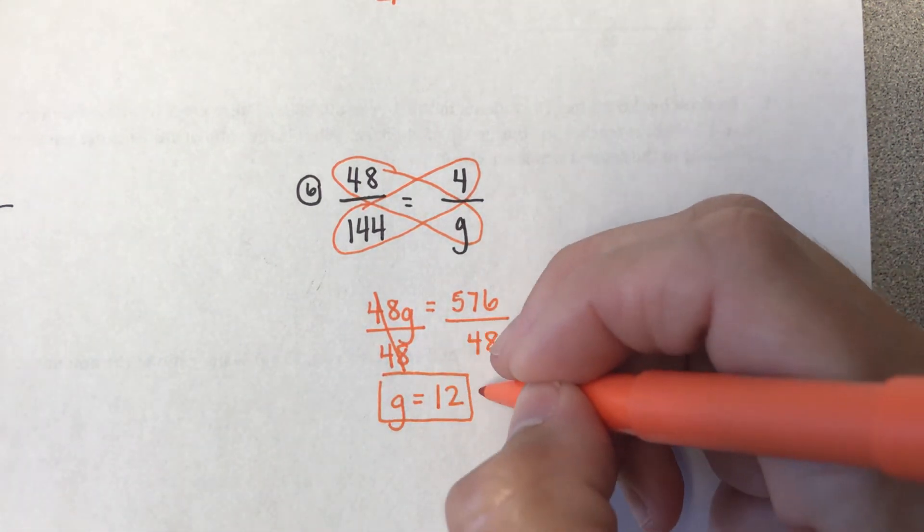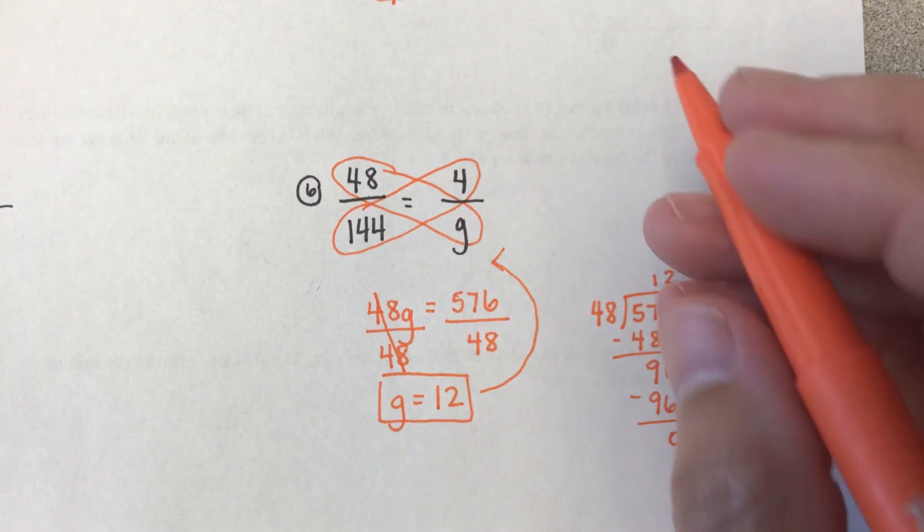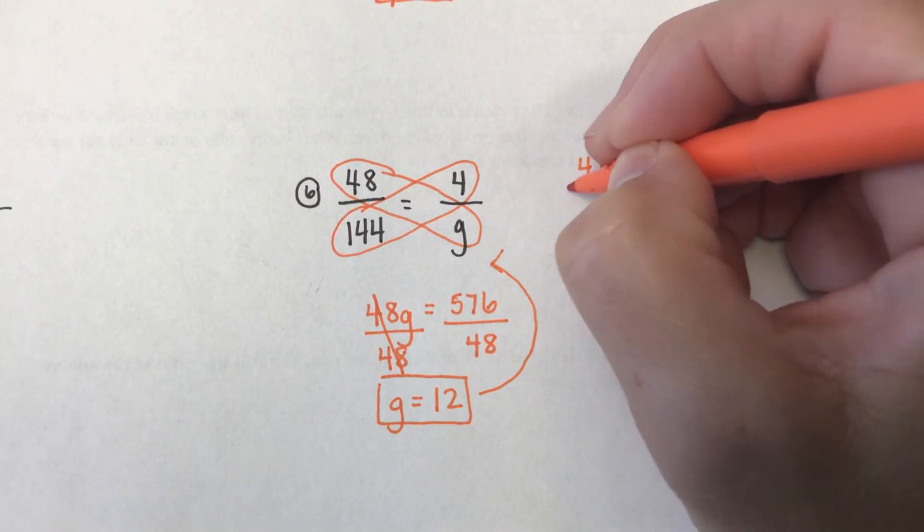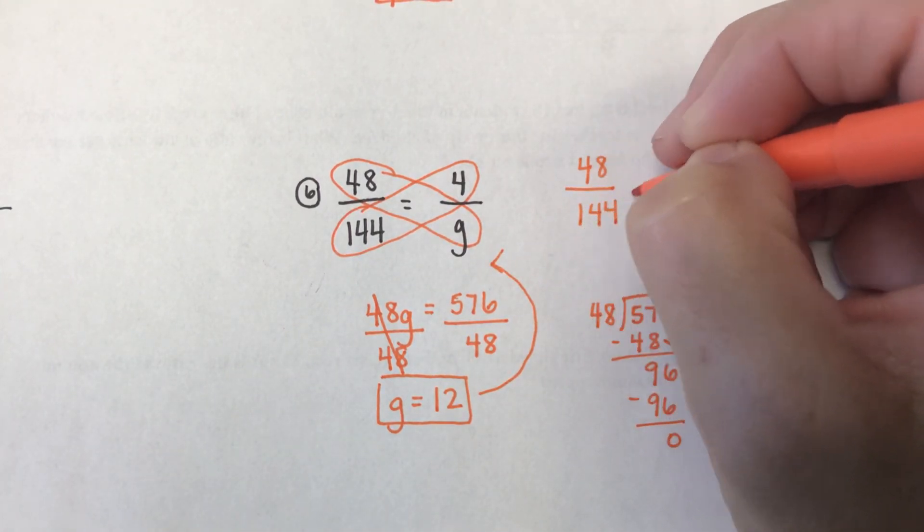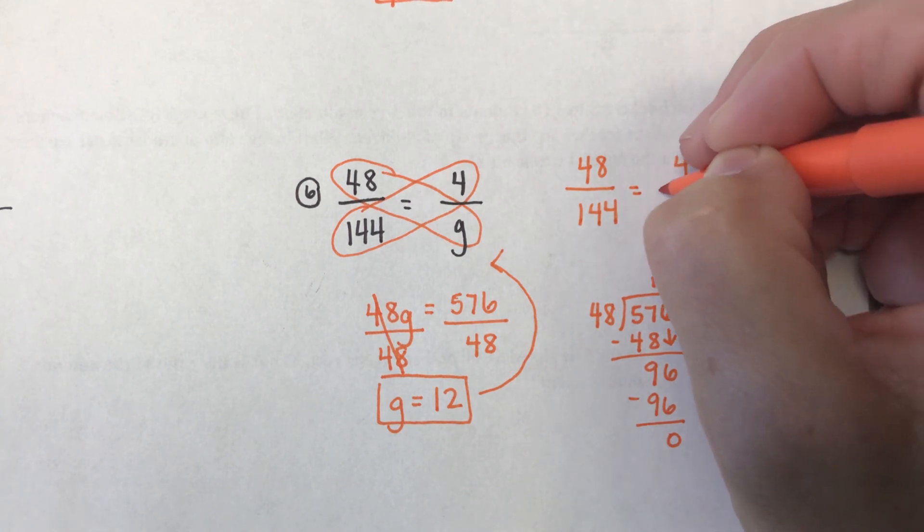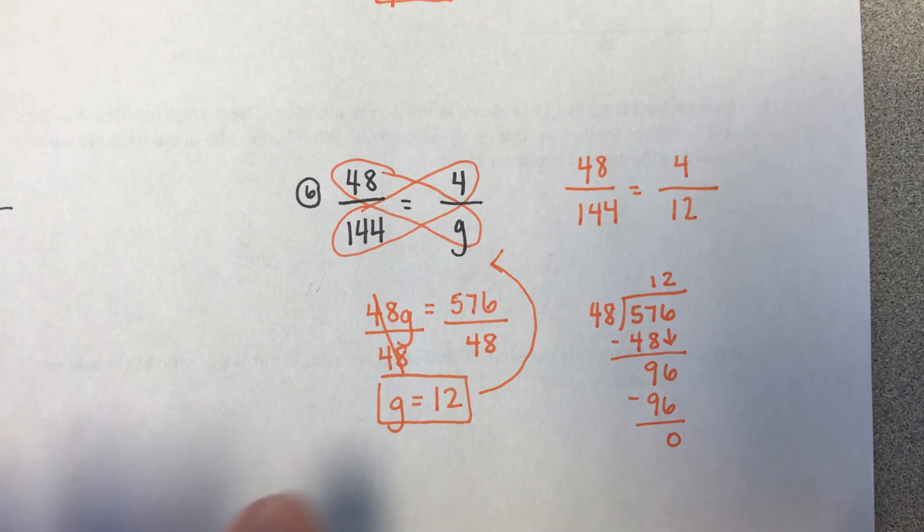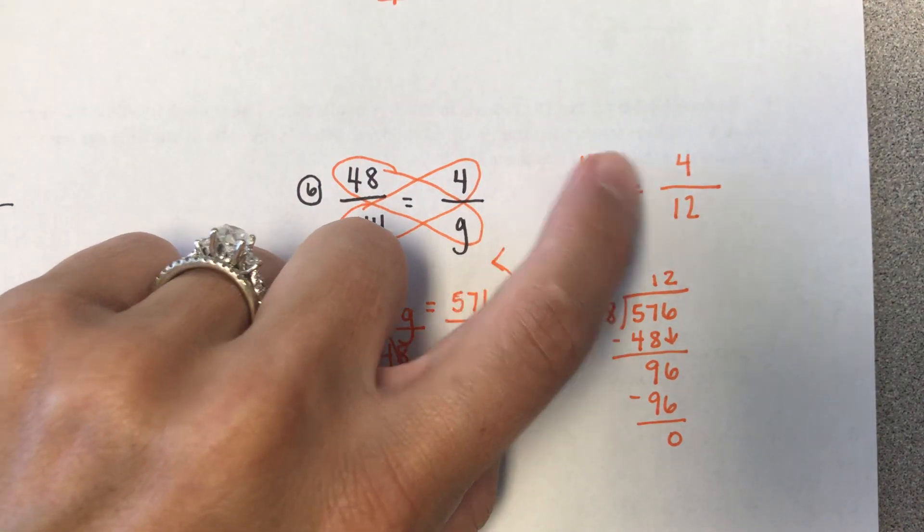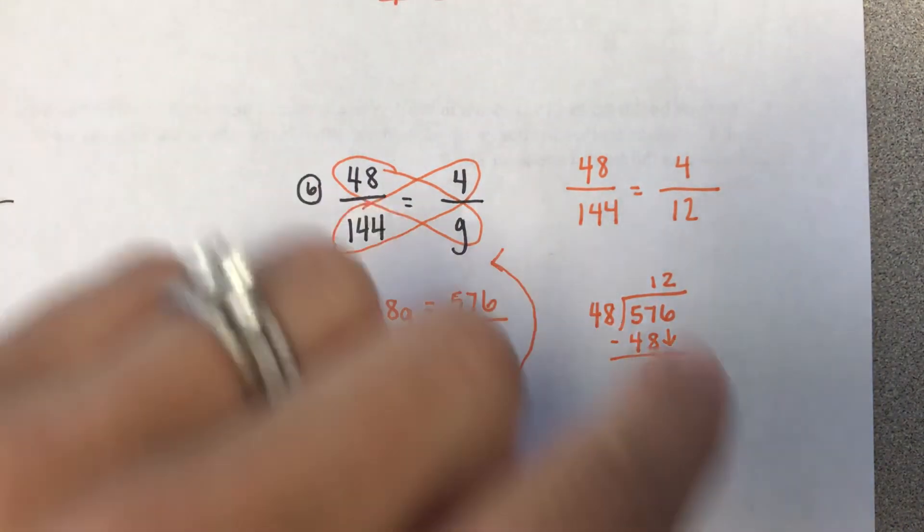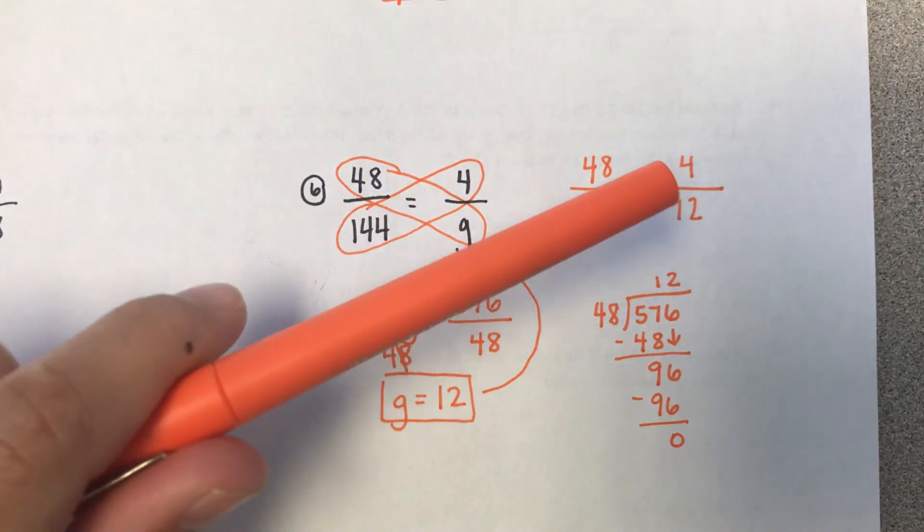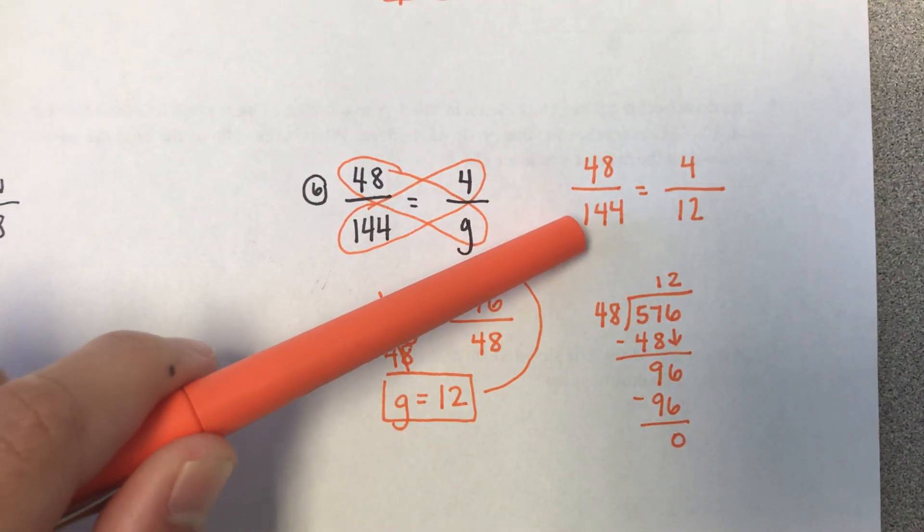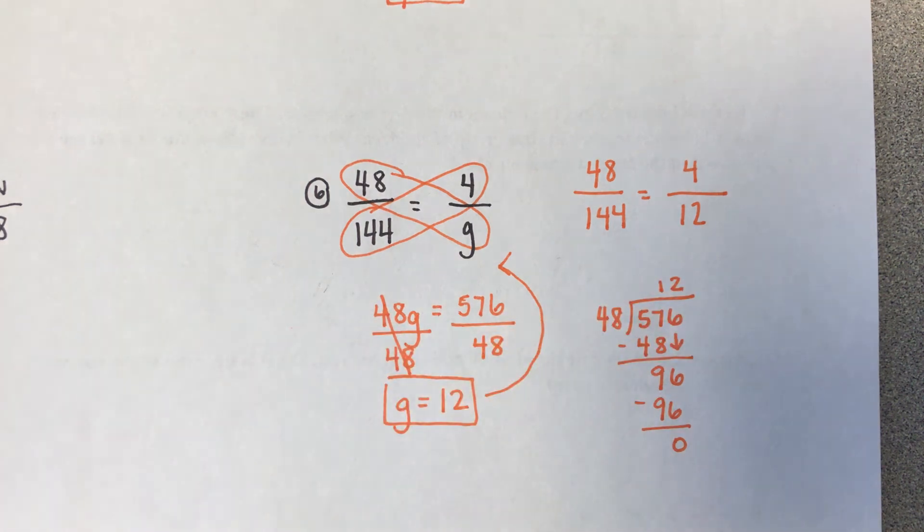So plug this in up here. And once again, we were talking about that connection a little while ago. If I have 48 over 144 and I had 4, remember I plug in this 12. Well, what can I do to get from 48 to 4? Well, I know if I do 48 divided by 12, it gives me 4. So if I did the same thing on the bottom, 144 divided by 12, it would give me 12.